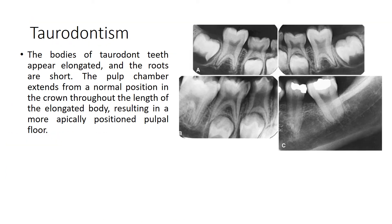Taurodontism: the bodies of taurodont teeth appear elongated and the roots are short. The pulp chamber extends from its normal position in the crown throughout the length of the elongated body, resulting in a more apically positioned pulpal floor. This looks like a bull's horns, hence the word taurodontism. You can see that the pulp chamber is very large and the roots are consequently shorter.